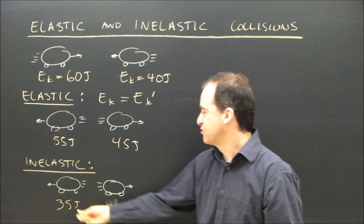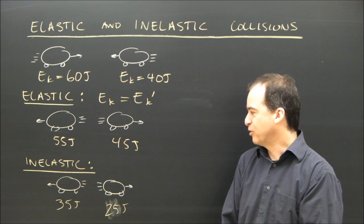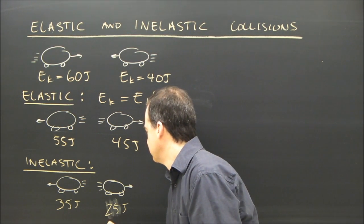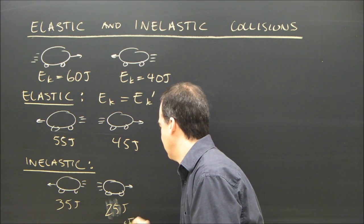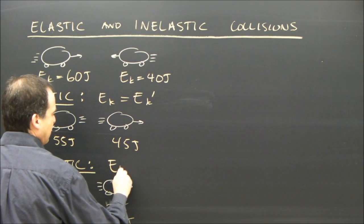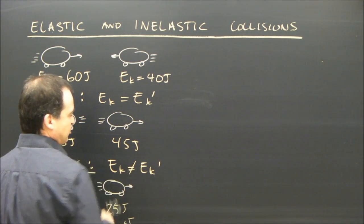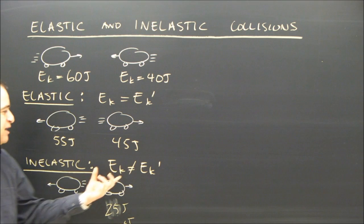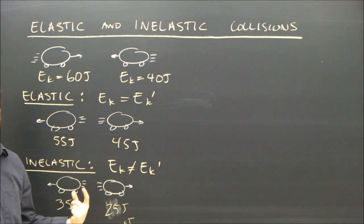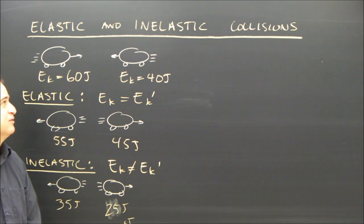If this has 25 joules afterwards, it means 40 joules is lost. So I can't say that the kinetic energy before is equal to kinetic energy afterwards. That statement is not true. It means I can't use this along with momentum to find out these final velocities. I have to have some other way of doing it.